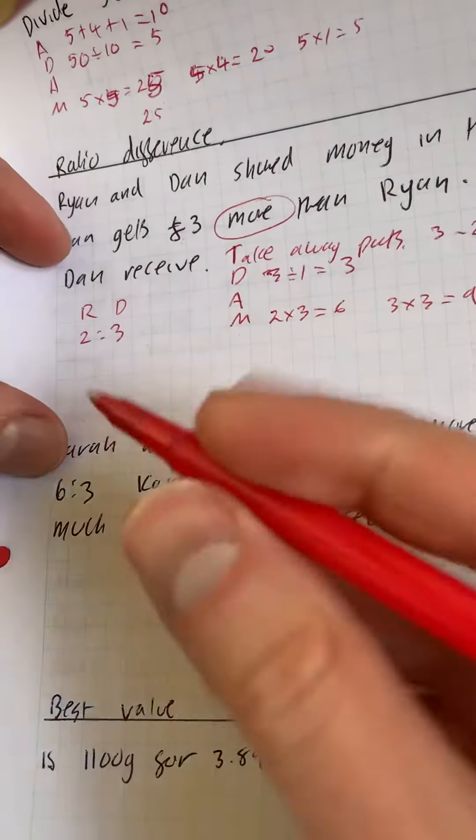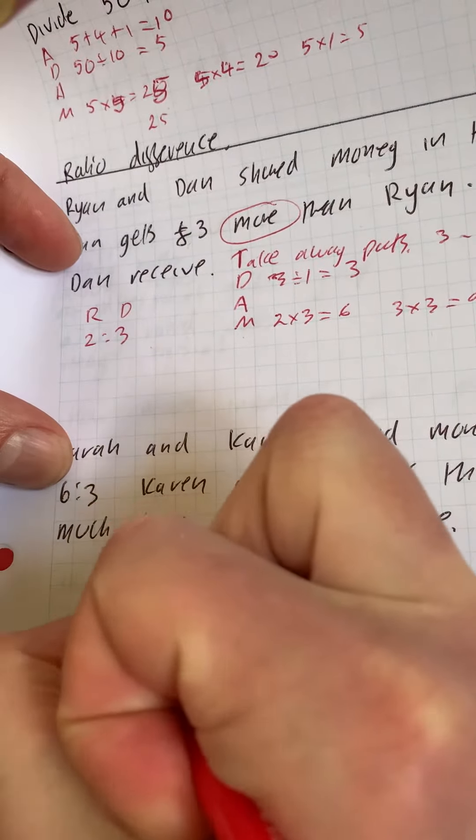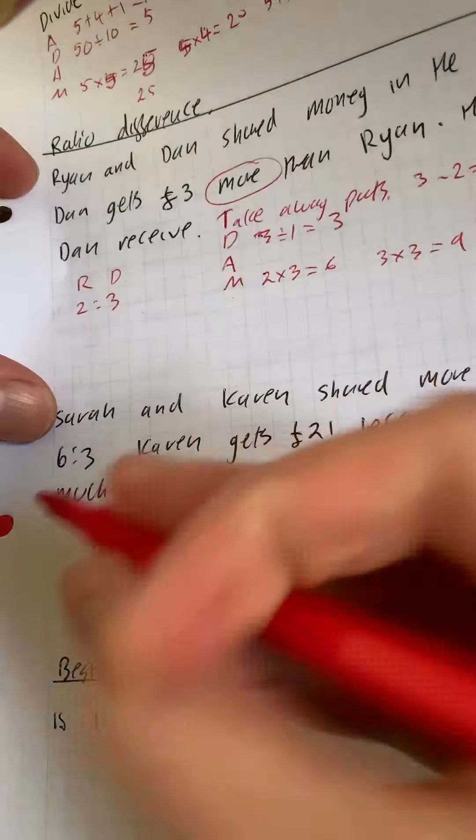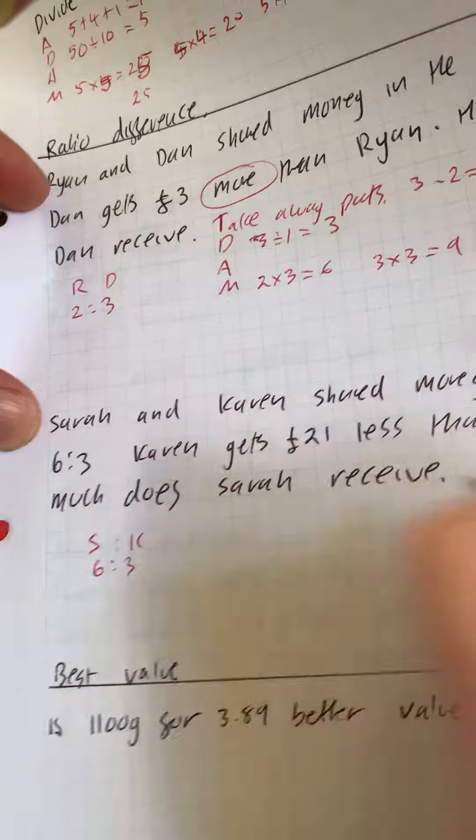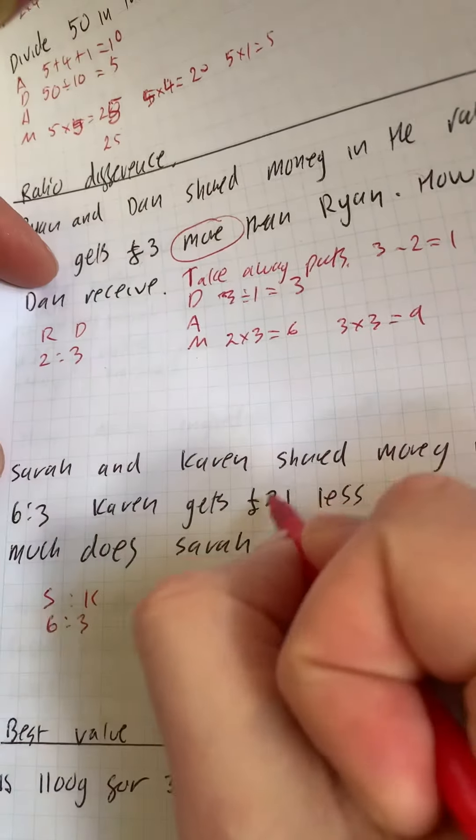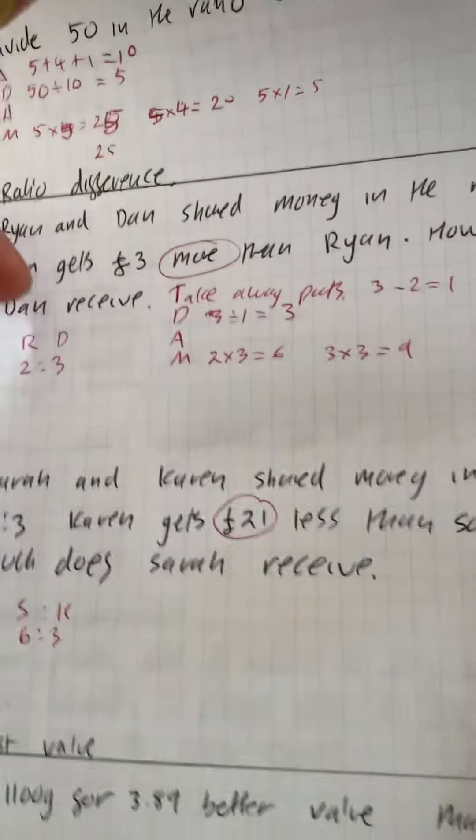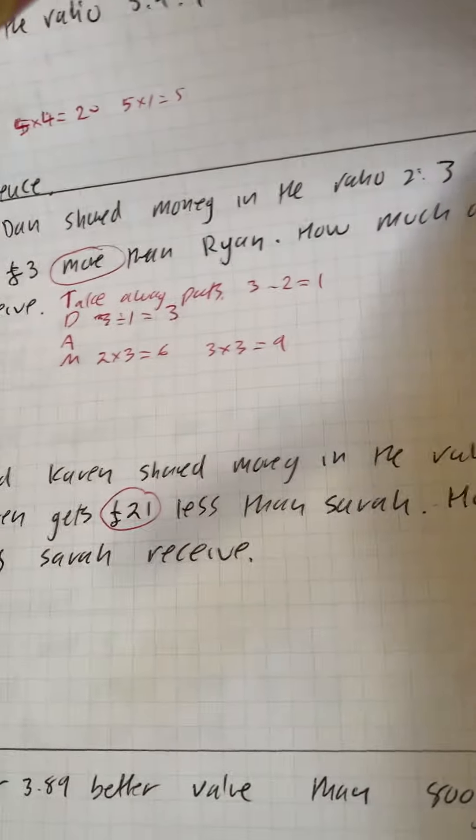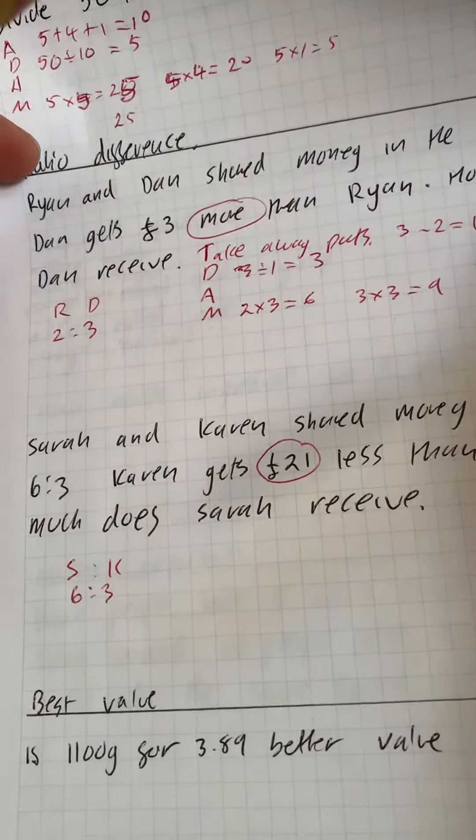It says Sarah and Karen, so I'll just put S and K, shared money in the ratio of six to three. It says Karen gets £21 less. So it's £21 less this time, but it's the same method than Sharon. How much does Sarah receive?